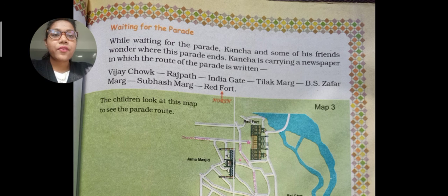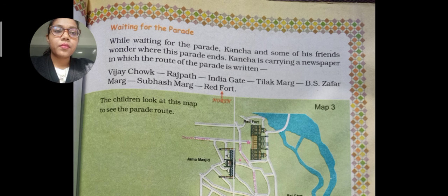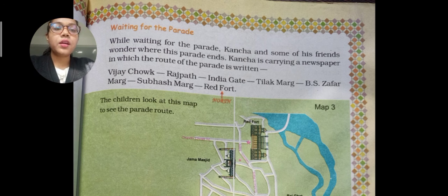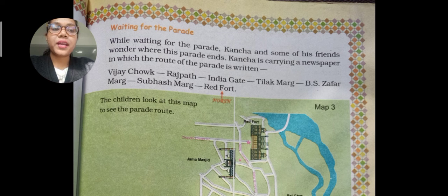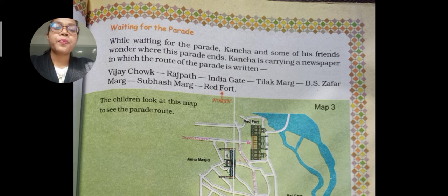The students are waiting for the parade. Kancha and some of his friends wonder where the parade ends. Kancha is carrying a newspaper in which the parade route is written: it starts from Vijay Chowk, goes to Rajpath, to India Gate, to Tilak Marg, to B.S. Zafar Marg, Subhash Marg, and finally Red Fort.